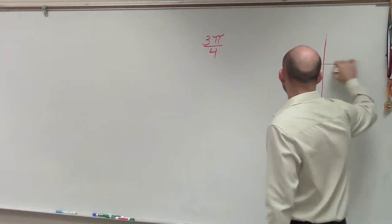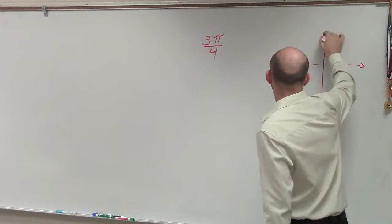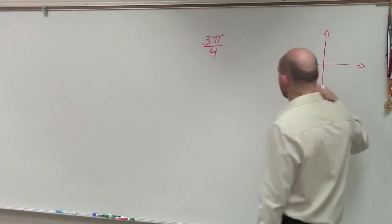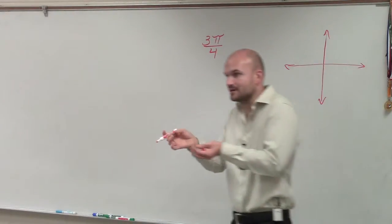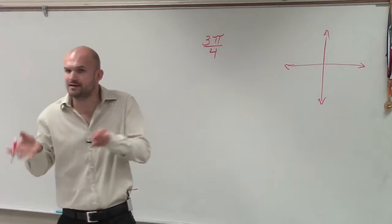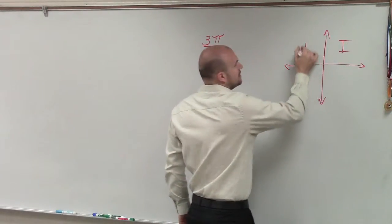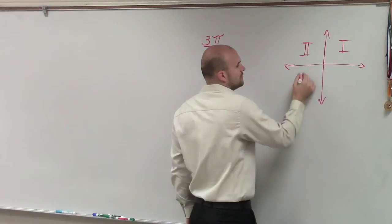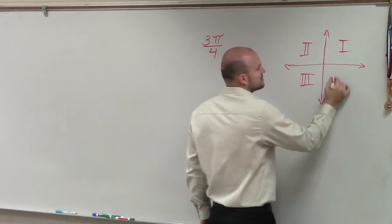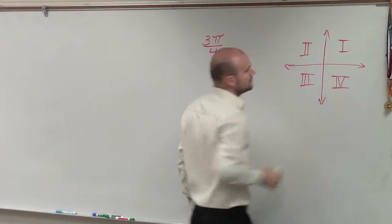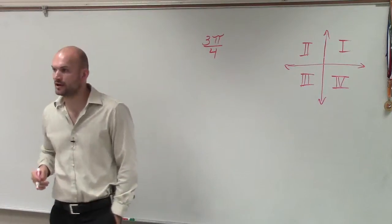So the first thing we want to do is just go back and remember the quadrants. When we first started in the Cartesian coordinate system, remember we plotted points, you're given coordinate points, and which quadrant does your coordinate point go in. So if you go counterclockwise, you can say there's the quadrant one, two, three, four.